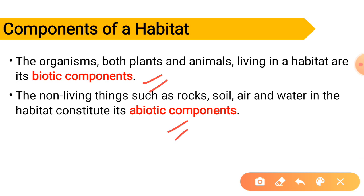Biotic component means those which are having life in them, like plants and animals. Abiotic component means those which are non-living, which are not having life, like rock, soil, air, and water. So together they make a habitat, having two types of components: biotic and abiotic.